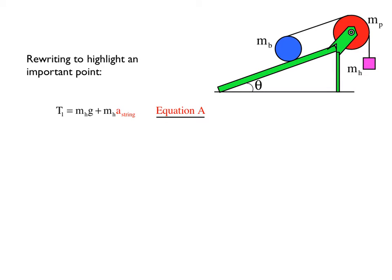Before we go after that other relationship, it's important to notice that the acceleration of the hanging mass will be the same as the acceleration of the string. I've actually written it that way. This might seem like a bizarre point to make, but it's actually going to be important later on. I've additionally identified this relationship as equation A for reference later.